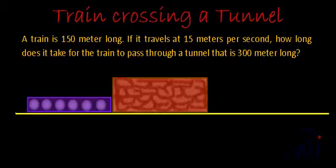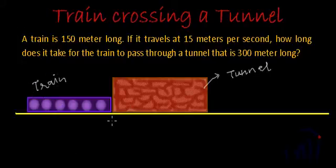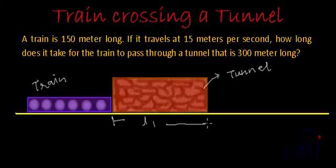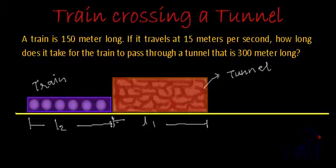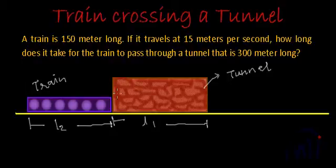As you can see, I have a tunnel and this is the train. The length of the tunnel I have assumed as L1, and the length of the train I have assumed as L2. In this situation, at this particular point, the front end of the train is just about to enter the tunnel. The time taken by the train to cross the tunnel completely will start from this very moment.